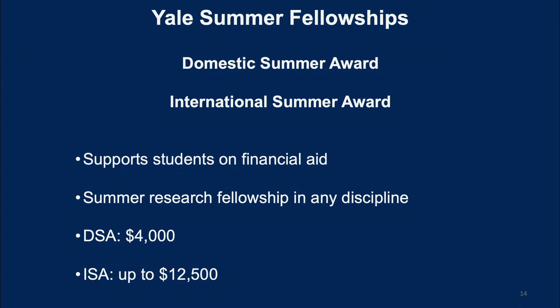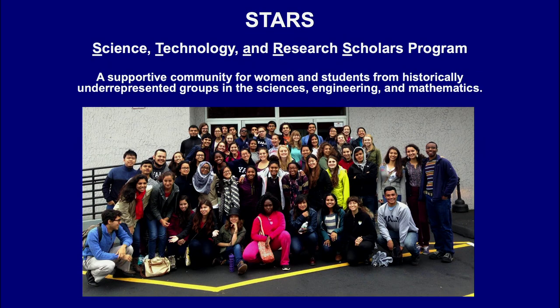If you are a student on financial aid, there are two additional awards. One is called the domestic summer award, which enables you to take four thousand dollars and work at a local institution near your home. So if you don't want to stay at Yale over the first summer, you can always work at a local institution using your domestic summer award. You're also possibly eligible for the international summer award, which you could take to go abroad and work with foreign faculty. The second program that I run through my office is a program called the Science Technology and Research Scholars program, or STARS.